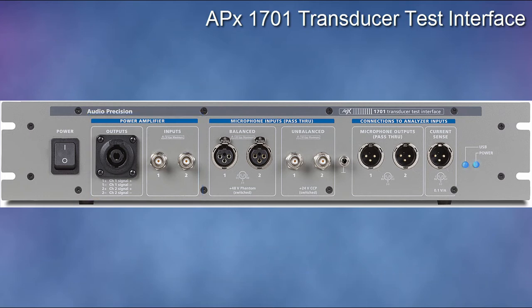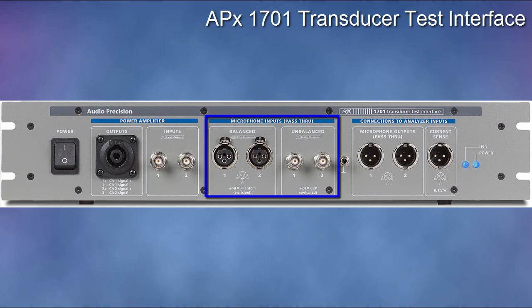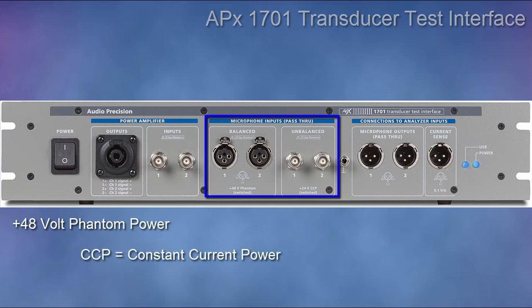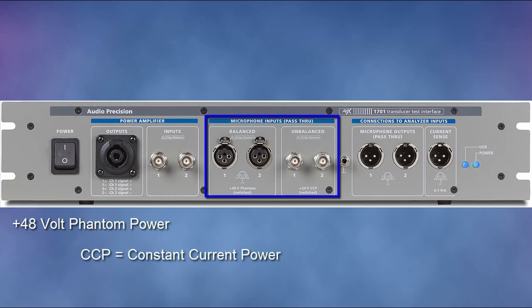For microphones, either as measurement mics or as the device under test, the 1701 is equipped with pairs of balanced and unbalanced microphone inputs. The balanced inputs include switchable 48-volt phantom power, while the unbalanced inputs support switchable CCP, constant current power, and are TEDS, or transducer electronic datasheet, compatible.